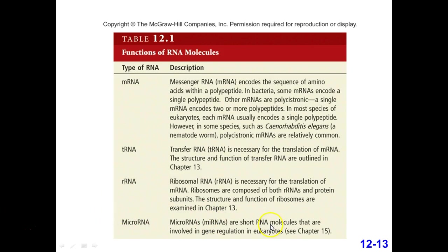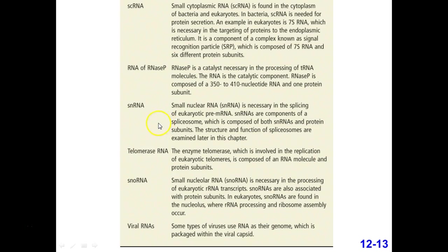Micro RNAs are short RNAs involved in gene regulation, found in eukaryotes. Small cytoplasmic RNAs, found in both bacteria and eukaryotes, help target proteins to the endoplasmic reticulum — they could be considered signaling RNAs that help send the messenger RNA to the endoplasmic reticulum in eukaryotes, since prokaryotes don't have an endoplasmic reticulum.